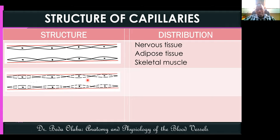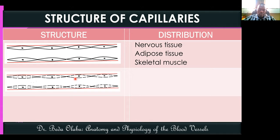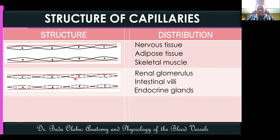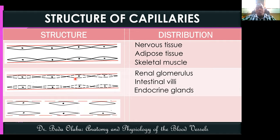Fenestrated capillaries have an intact basement membrane but small holes — fenestrae (windows) — through the endothelial cells, making the capillary appear like a sieve. These allow substances to pass through and are found in the glomerulus of the kidney, the villi of the small intestines, and endocrine glands — all regions with high absorption.